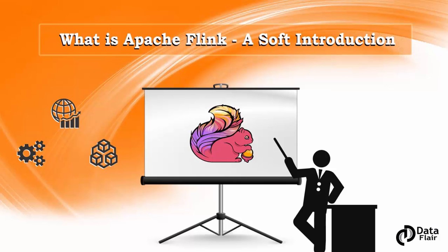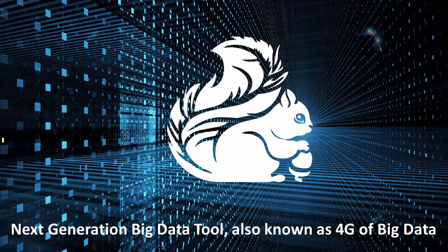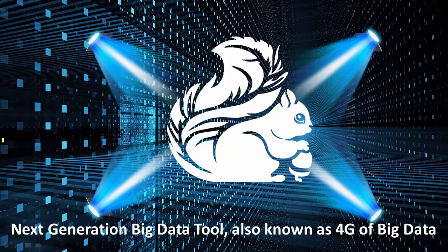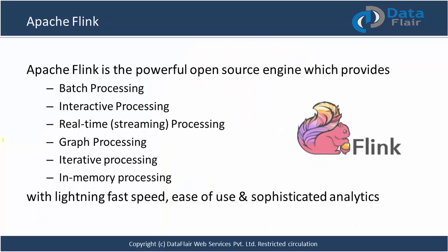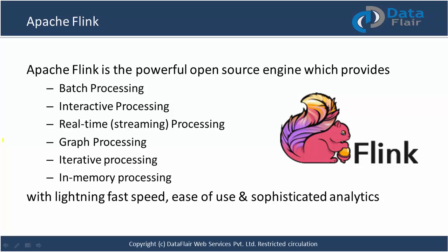Apache Flink is the next generation big data tool, also known as the 4G of big data. It is a powerful open source engine which provides the following properties: batch processing, interactive processing, real-time processing, graph processing, iterative processing, and in-memory processing — all with lightning fast speed, ease of use, and sophisticated analytics.